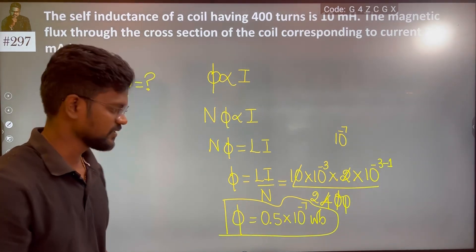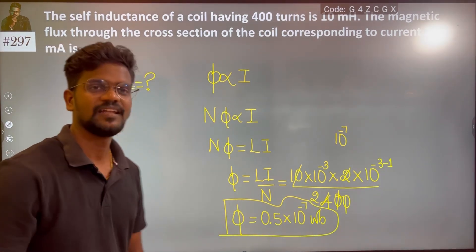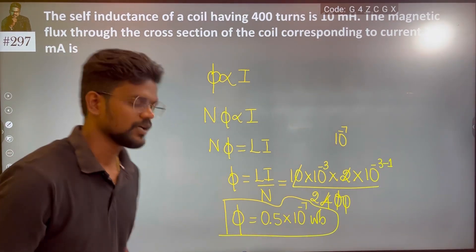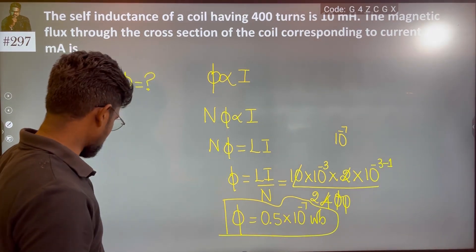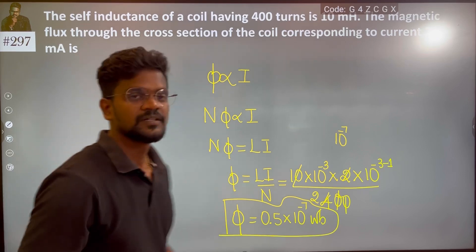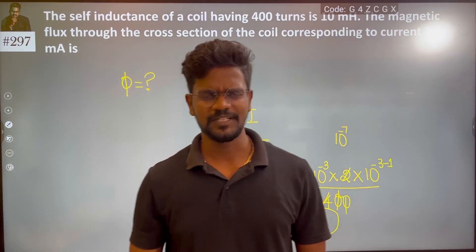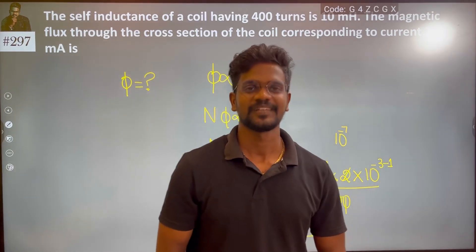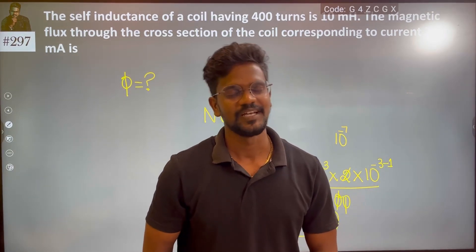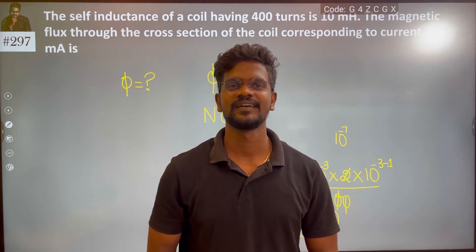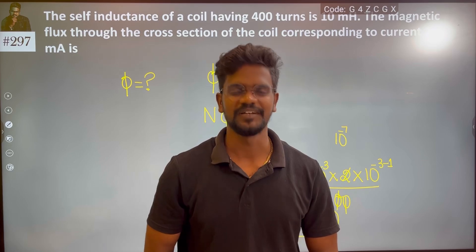This is the final answer. The answer is 0.5 × 10⁻⁷. Thank you!